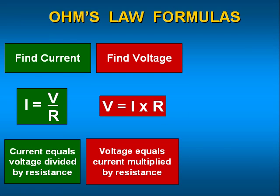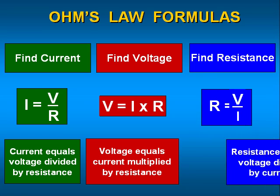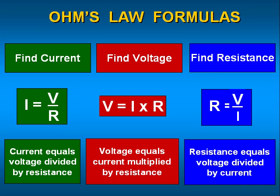Current equals voltage divided by resistance, or I equals V divided by R. Current is represented by the letter I, voltage by the letter V, and resistance by the letter R. To find voltage V, current is multiplied by the resistance, or V equals I times R. And to find resistance, voltage is divided by current, or R equals V divided by I. You must memorize these equations and know how to apply them in order to solve circuit problems.